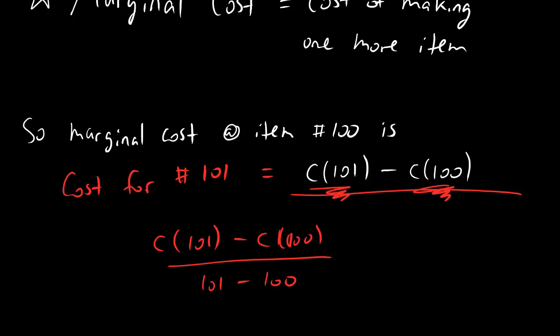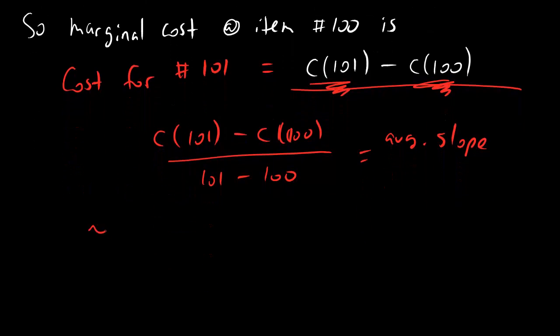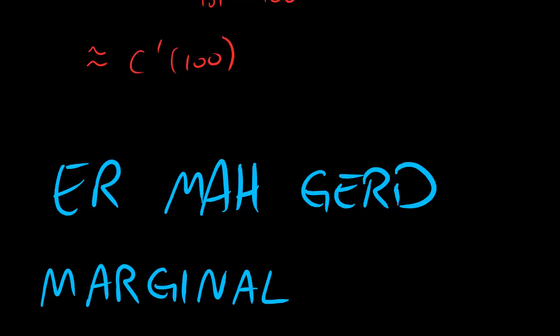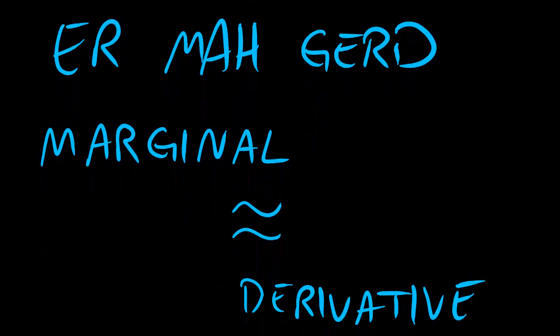And all of a sudden, this quantity here looks like average slope. And not only does it look like average slope, but it looks like average slope between two points that are really close together. And if you take average slope between two points that are really close together, this is approximately the derivative. Because that's how derivatives work. You take average slope between a point, and you make that point closer and closer, and that becomes the derivative. So what we have here, for marginal cost, it's not exactly the derivative, but it is approximately the derivative. It's pretty close. And so, oh my god, marginal cost is the same thing as derivative.